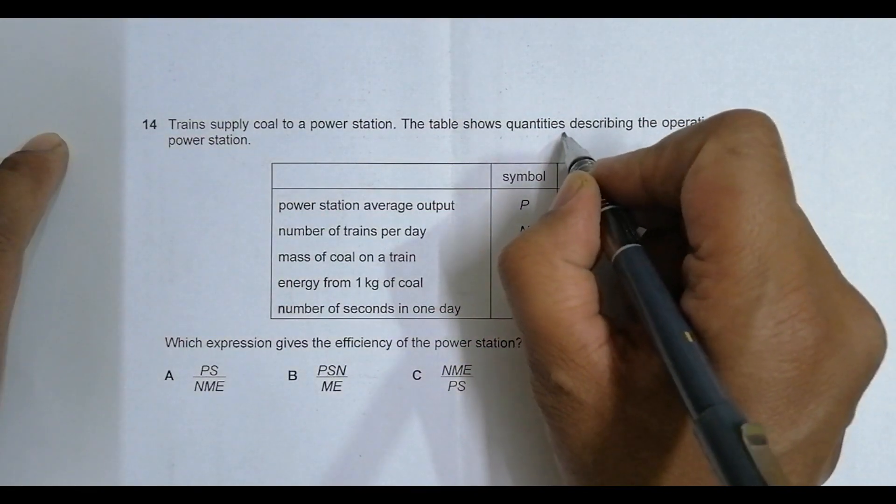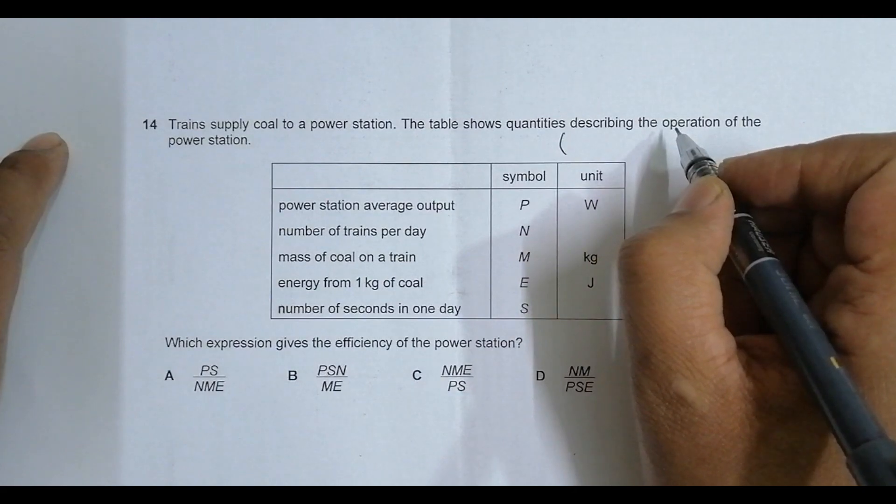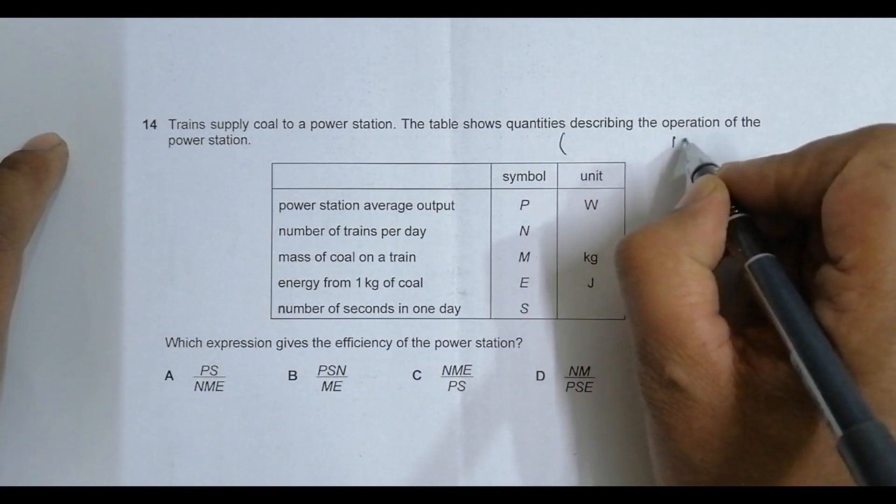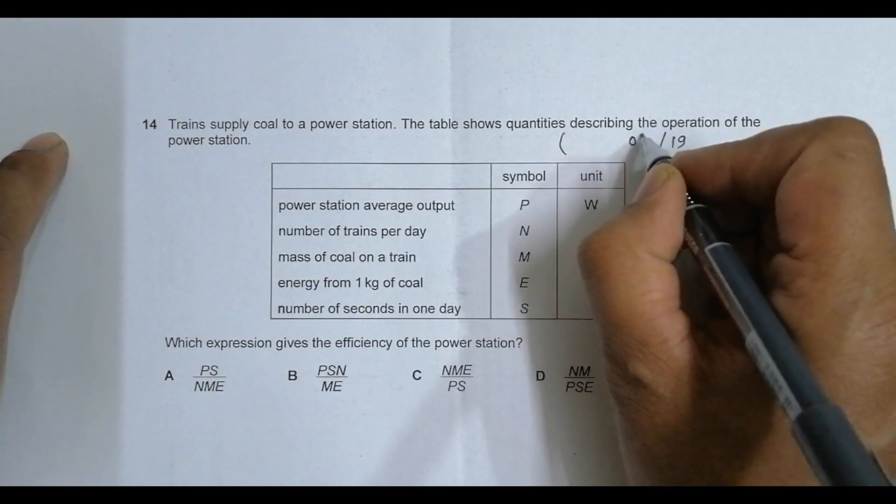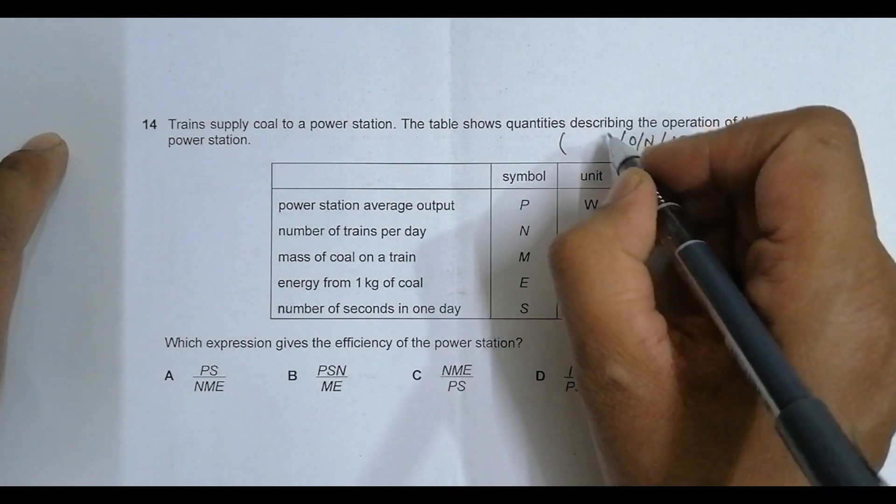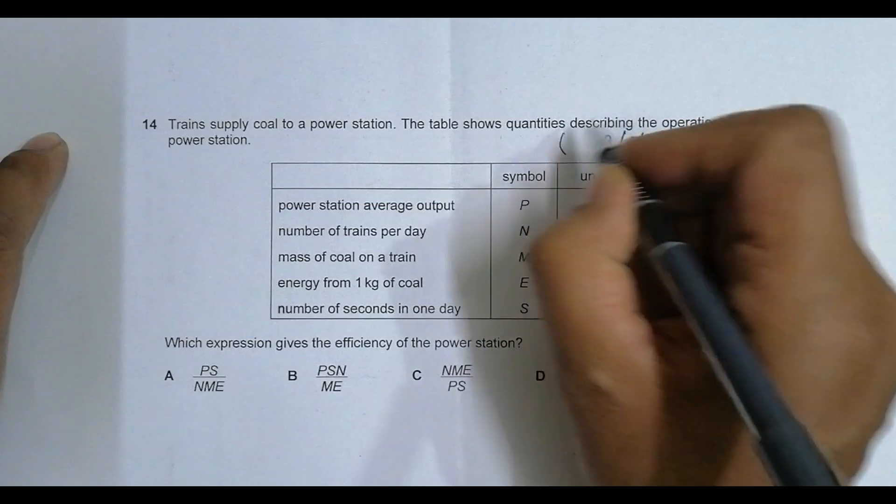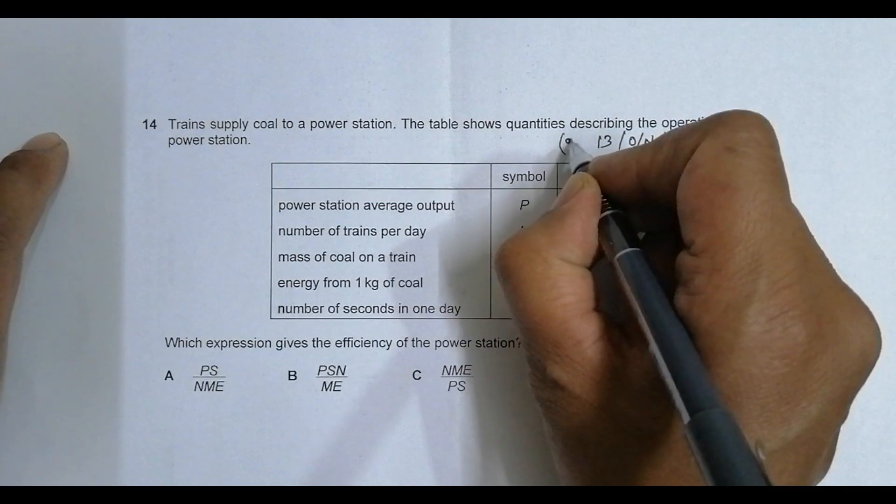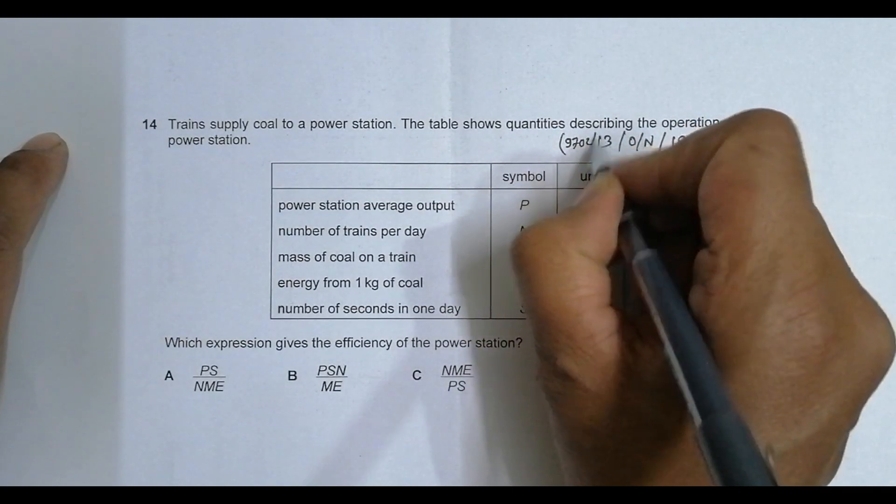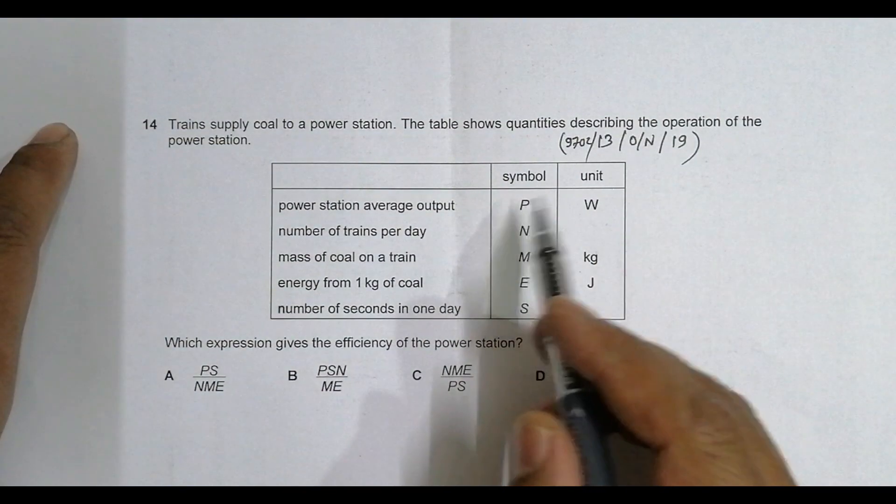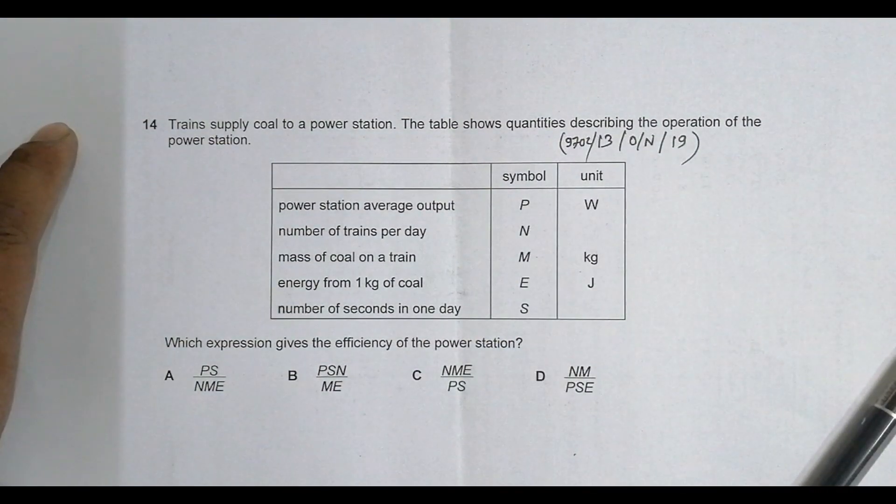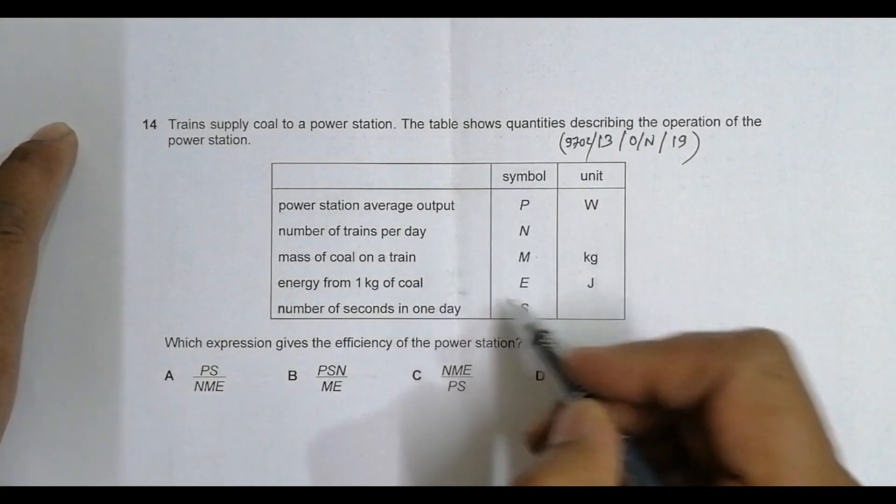Hello folks, this question belongs to 2019 O/N, variant 13, and the subject code is 9702. The question number is 15.